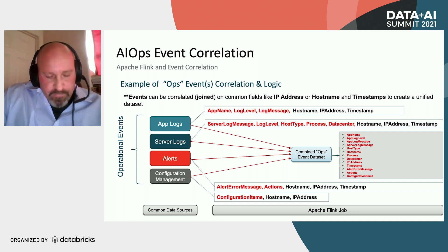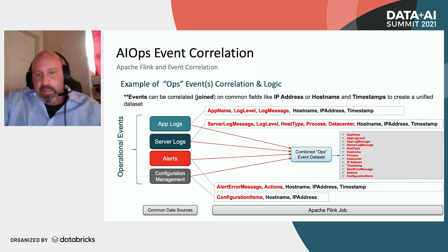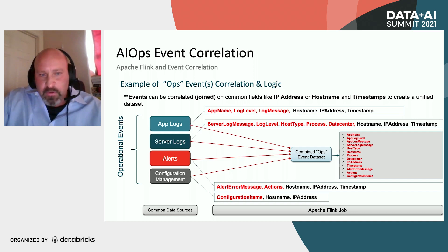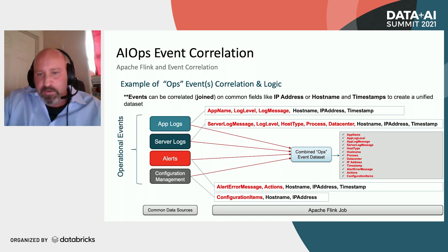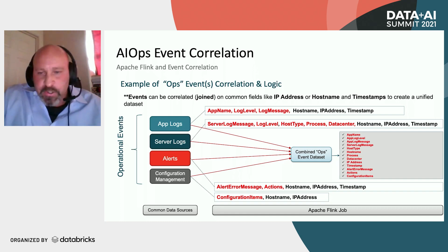In terms of the events we ingest, one key requirement is to correlate all those events. All the different data sources ingested from our Flink job — app logs, server logs, alerts, configuration management data — need to be joined to create a unified data set. For example, app logs include fields like app name, log level, log message, host name, IP address, and timestamp. Server logs include server log message, log level, host type, process, data center, and host name. Alerts include alert message, actions, host name, IP, timestamp. And configuration items include host name and address. All of those data elements need to be combined into a unified data set to be processed and passed to our machine learning models.